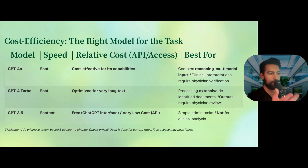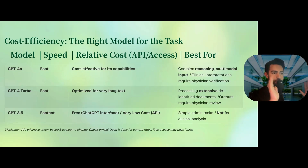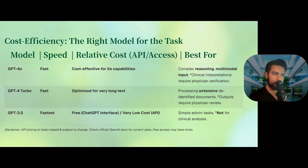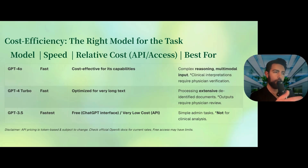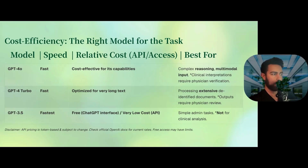In terms of cost efficiency: GPT-3.5 is the free version — everyone can use it — and the API cost is very low for automated workflows. Remember, this version is for simple administrative tasks, not clinical analysis. GPT-4 Turbo is fast and optimized for extensive de-identified documents, but you must review everything. GPT-4o is the best for complex reasoning and multimodal input — use it for clinical interpretation, and always check which version you're using at the bottom of the interface.